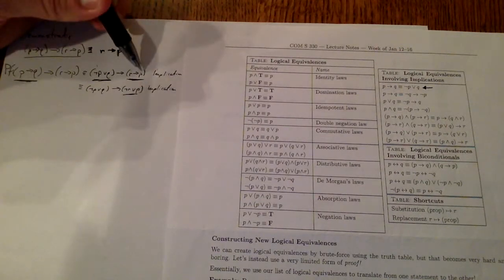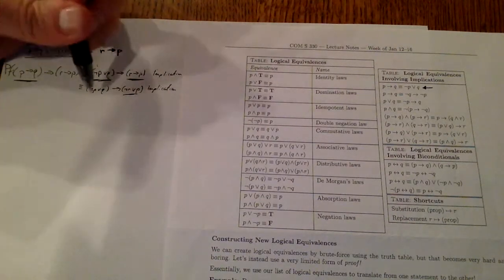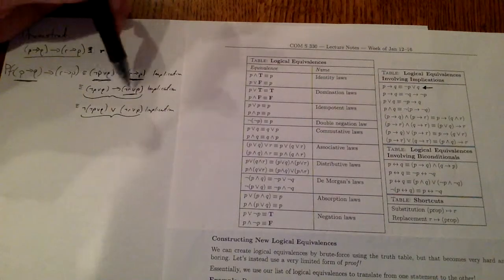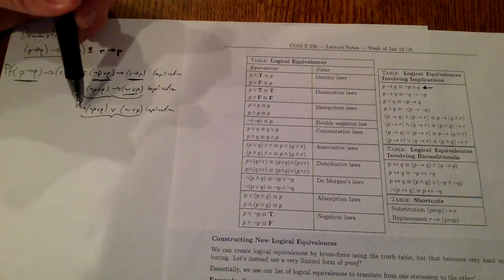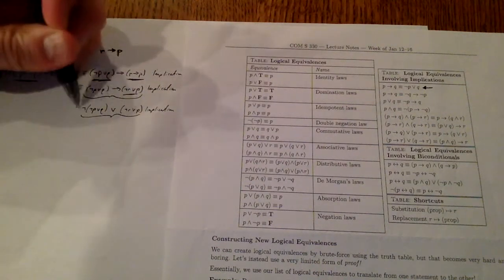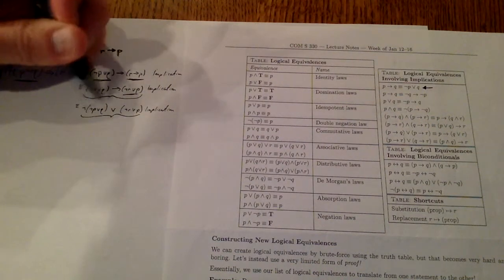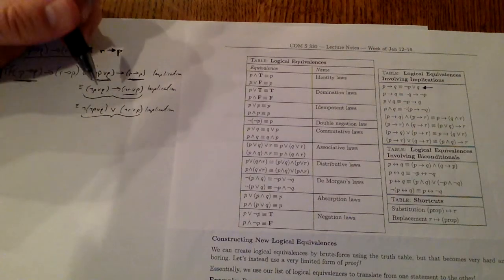Next, I remove this implication with this statement. Then I took this full implication—this quantity implies this quantity—and I used the same law to see that this quantity negated, or this quantity. Now I see that there's a not in front of a conjunction including an or symbol. Let's use DeMorgan's Laws.